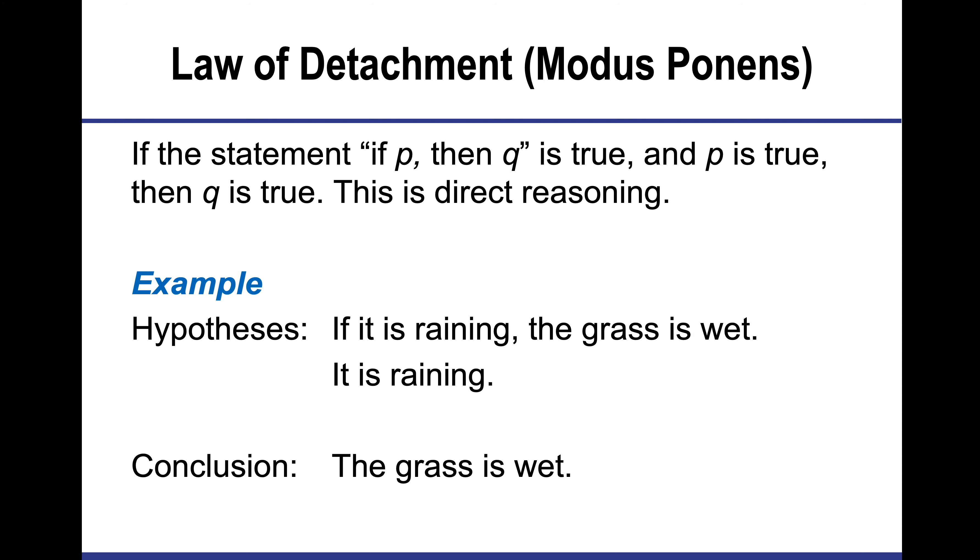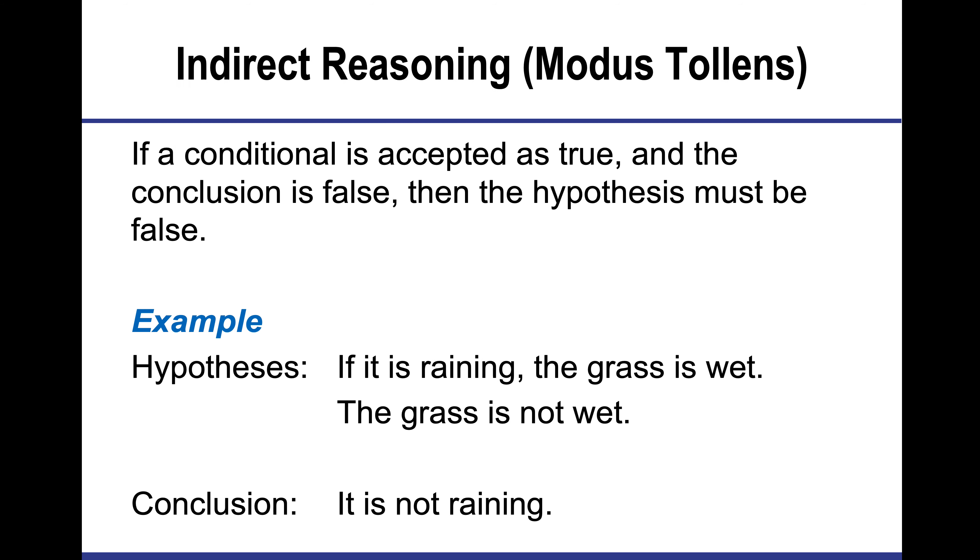The law of detachment shows us if P then Q is true and P is true, then Q is true. If you are in San Diego, then you are in California. If that's a true statement, P and Q are both true independently. I would have to be in San Diego and I'm also in California, so that's direct reasoning. Here's another example: if it is raining, then the grass is wet. It is raining, if that's true, then I would also conclude the grass is wet.